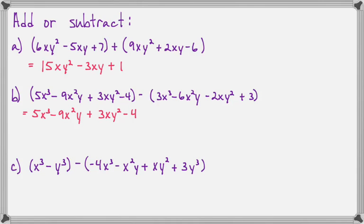Everything in the first polynomial stays the same. Then I get -3x³ + 6x²y + 2xy² - 3. Notice that every sign changes when you distribute the negative sign. We've seen that several times before. Now we can combine like terms.